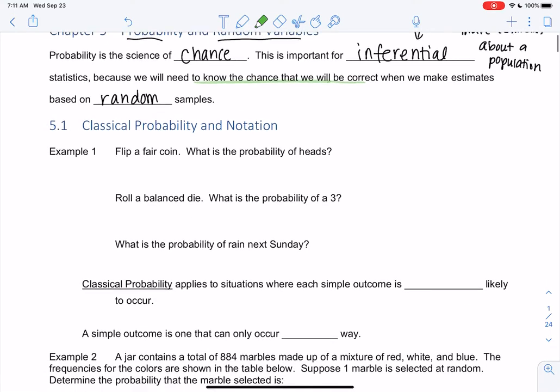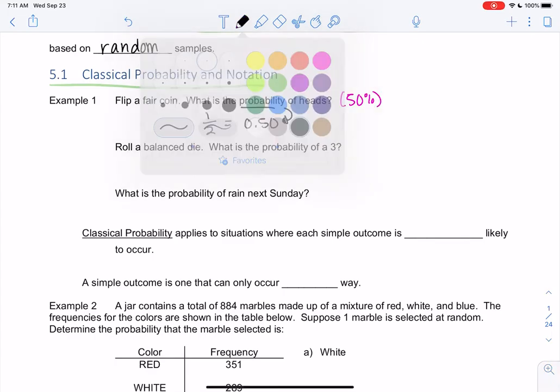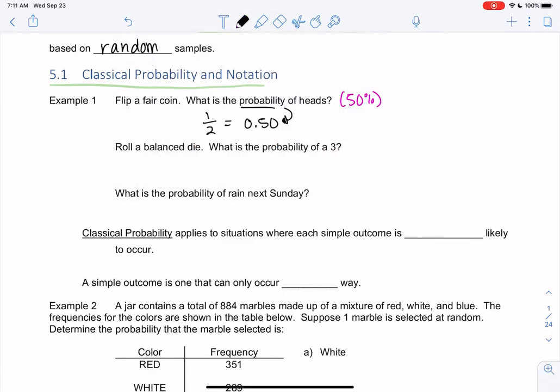We're just going to start with classical probability and notation. If we flip a coin, what's the probability of heads? Flipping a coin, there's two sides, so it's 1 out of 2 or 0.50. Probability is usually decimals, not percents. Some of us might have said 50%, and all of this means 50%, but we just use decimals for probability.